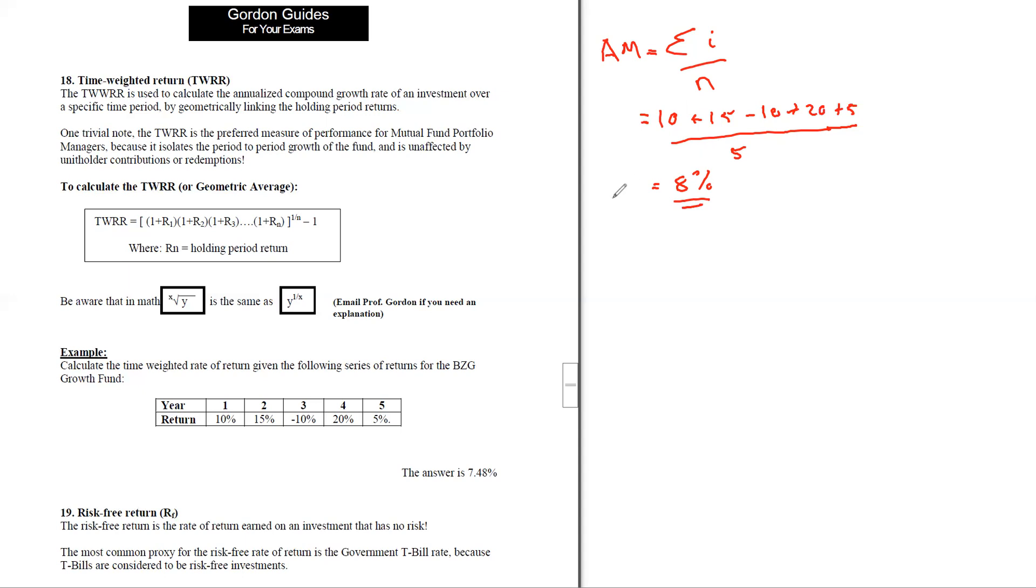The time weighted rate of return is going to be calculated according to our formula as one plus each of the returns, and then we'll put all those to the exponent of one over n, which is the number of time periods that we have. Then we'll subtract one, multiplied by 100 to get our answer.